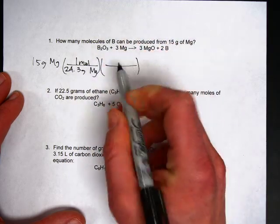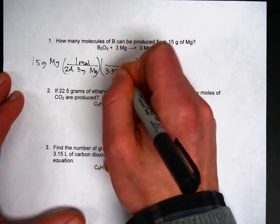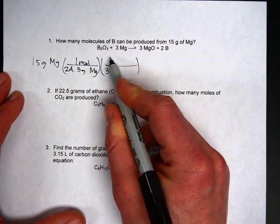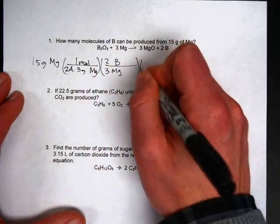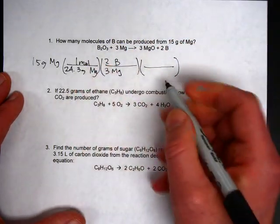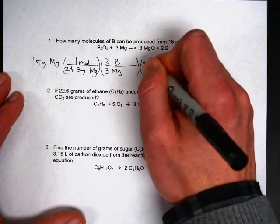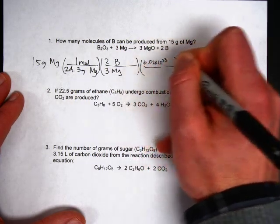Then use the mole ratio. Magnesium is a 3 so 3 moles of magnesium will always give us 2 moles of boron. And finally you want to answer molecules to multiply on top by Avogadro's number 6.02 times 10 to the 23rd.